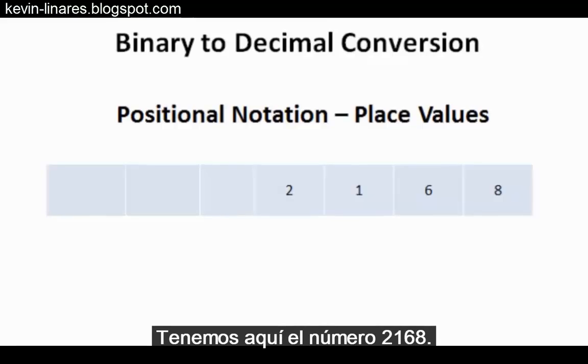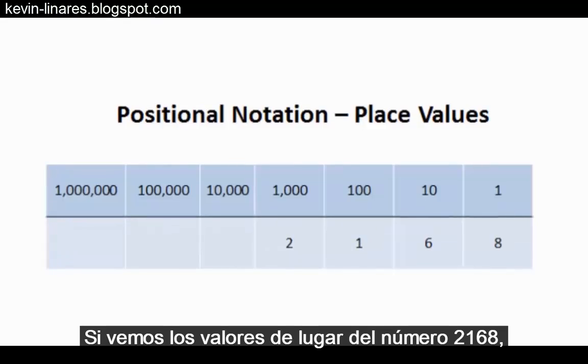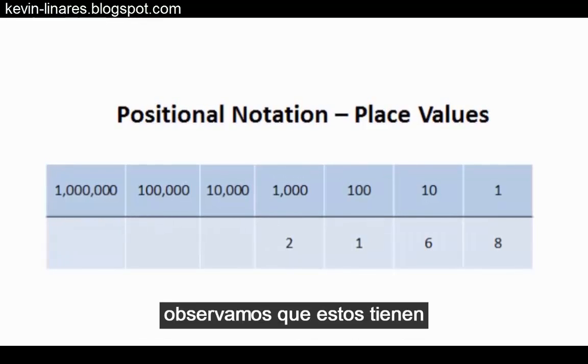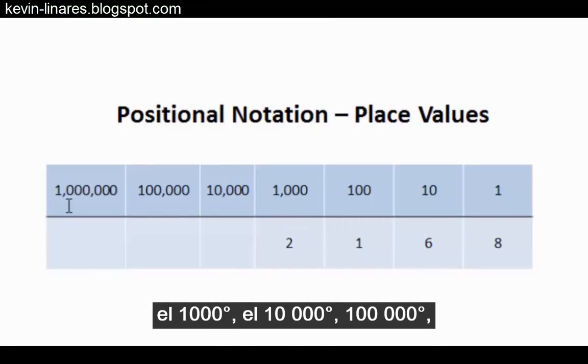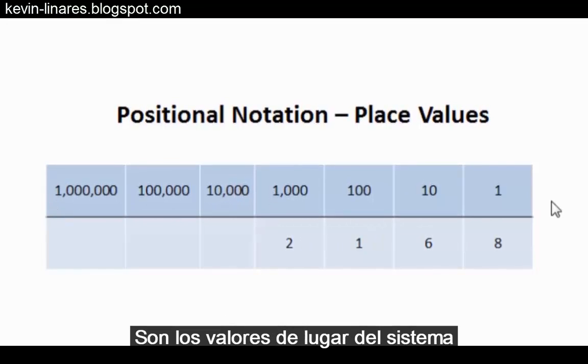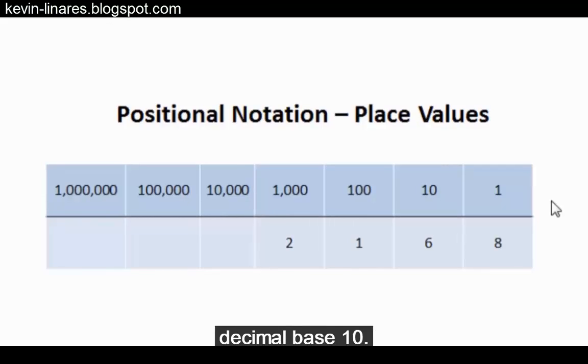I have the number 2,168 here. If we look at the place values of the number 2,168, we can see that the place values have the ones place, the tens place, the hundreds place, the thousands place, 10,000, 100,000, and million. These are the place values of the base 10 decimal number system.